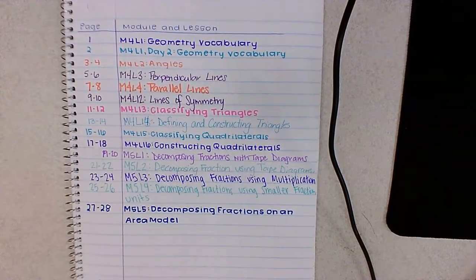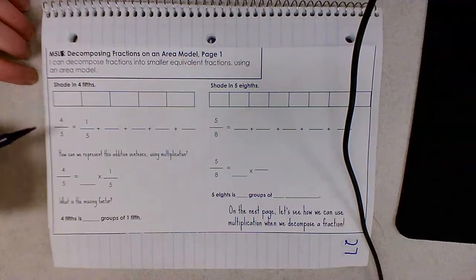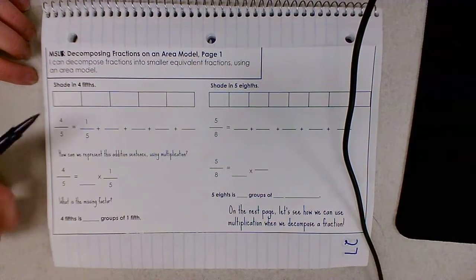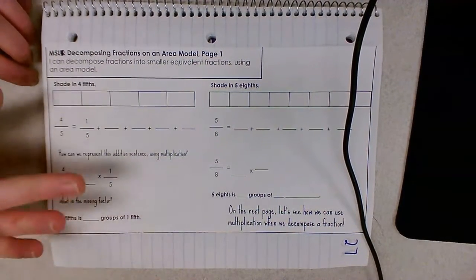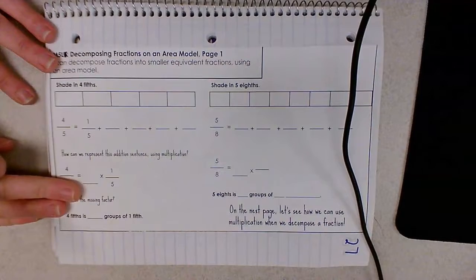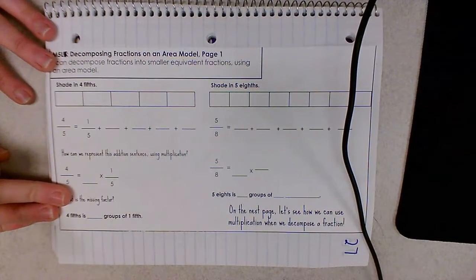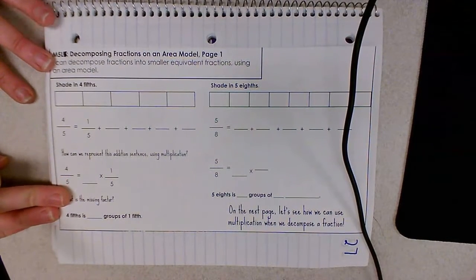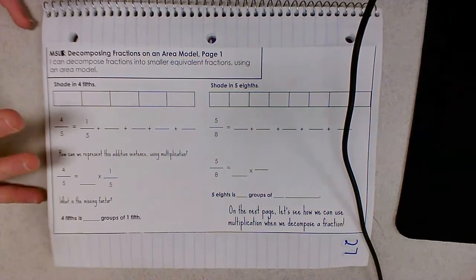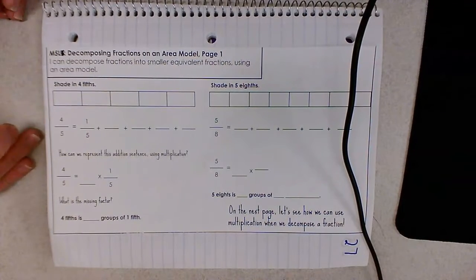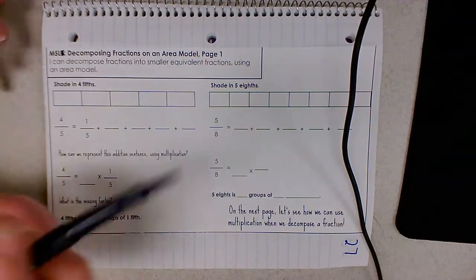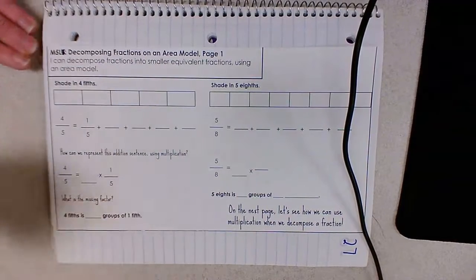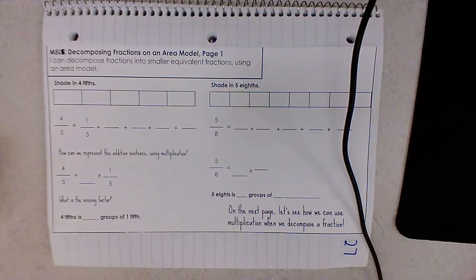Take a moment to fill in your table of contents. Similar to the lessons before, our objective is that we can decompose fractions into smaller equivalent fractions, but today we're going to be using an area model, and we're going to represent that decomposition with a multiplication sentence. Because the goal of math is to be really efficient — to find the quickest and easiest way to accomplish a task — and even though repeated addition is a great tool, multiplication is a more efficient tool.